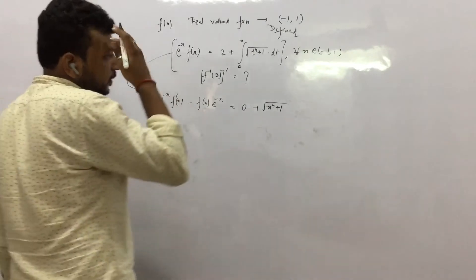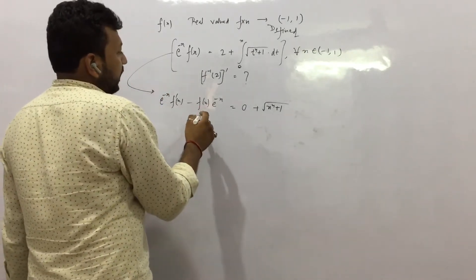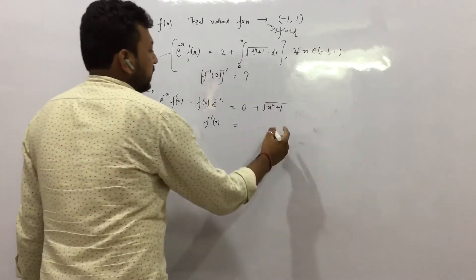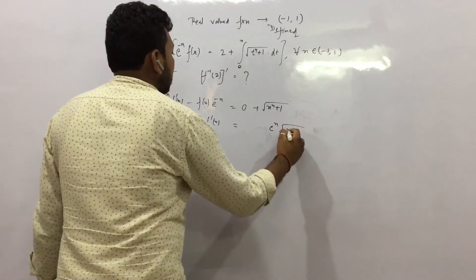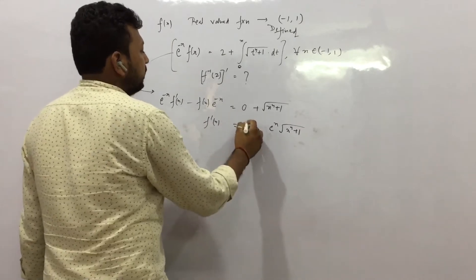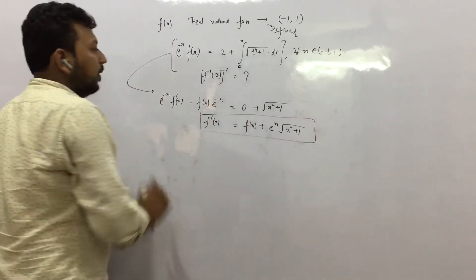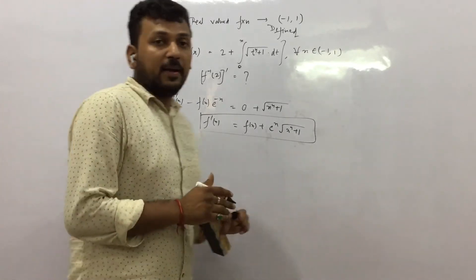So from this we have f dash x - e to the power x will go this side - into x to the power 4 plus 1, and plus f(x) will go this side. So this is the derivative f dash x that we are getting.